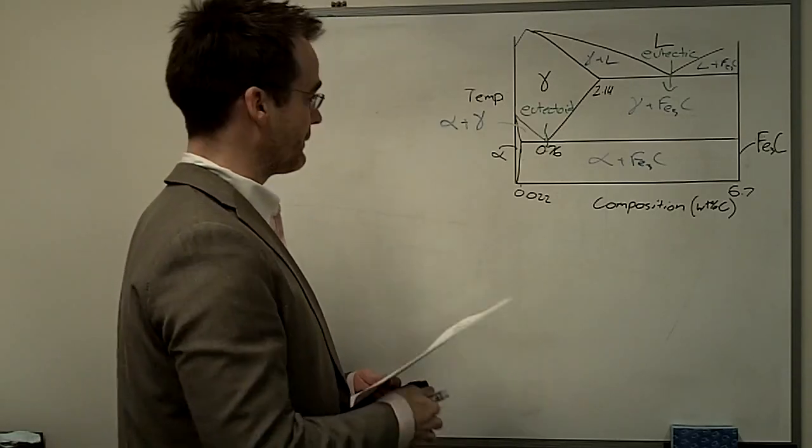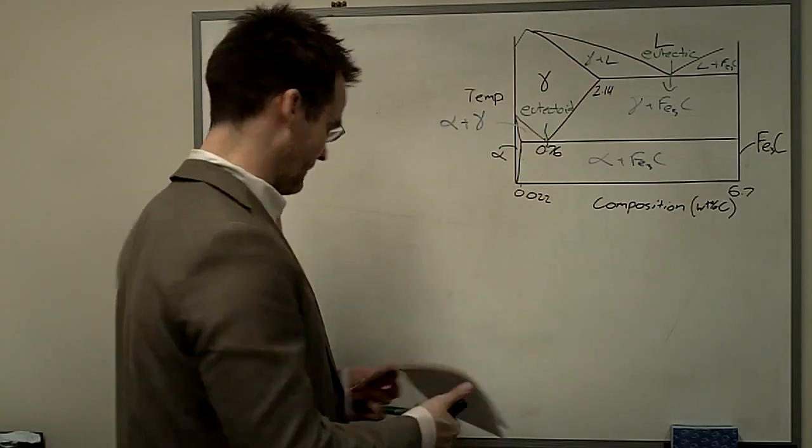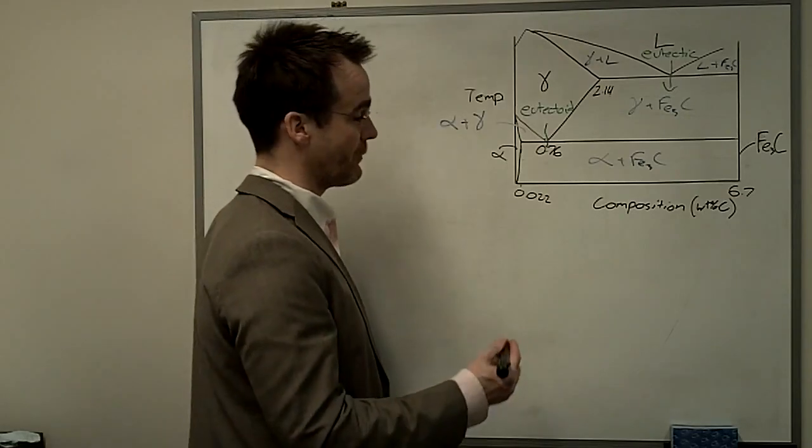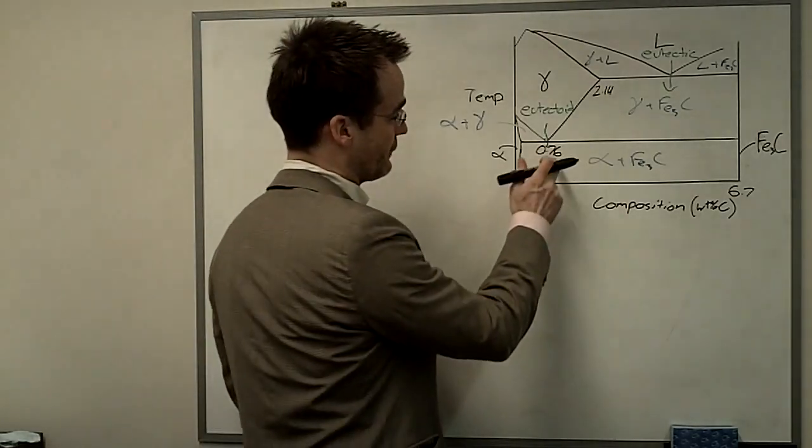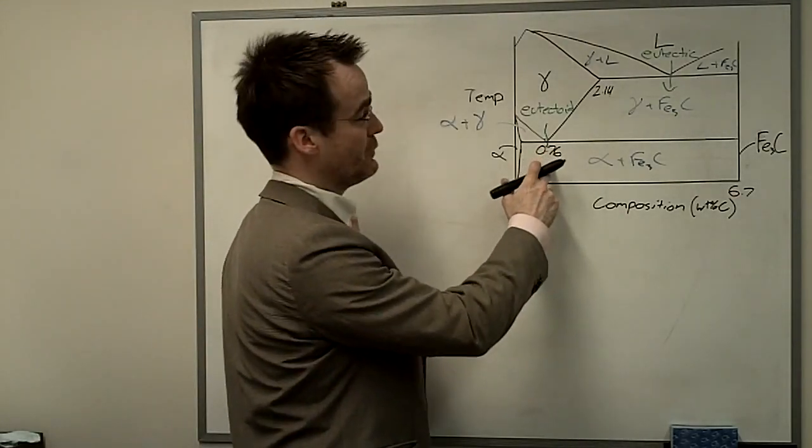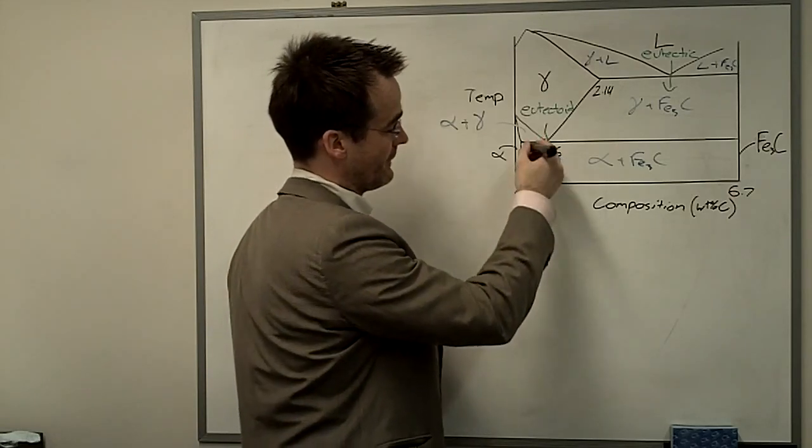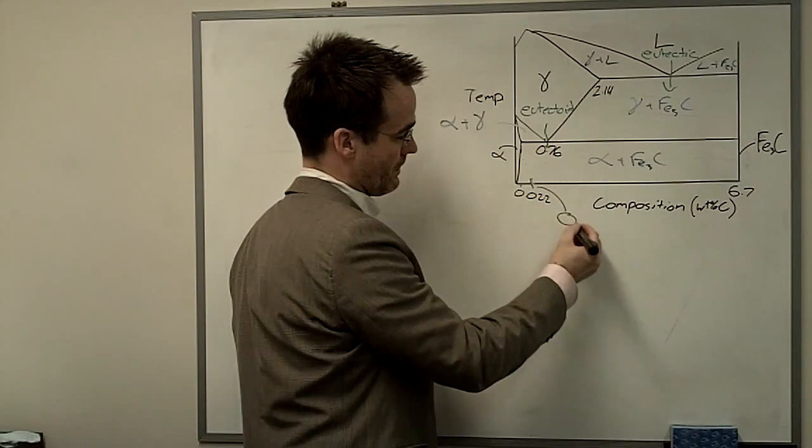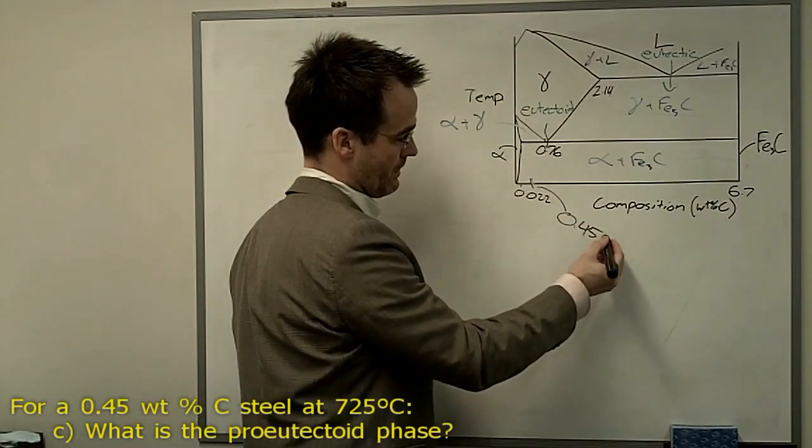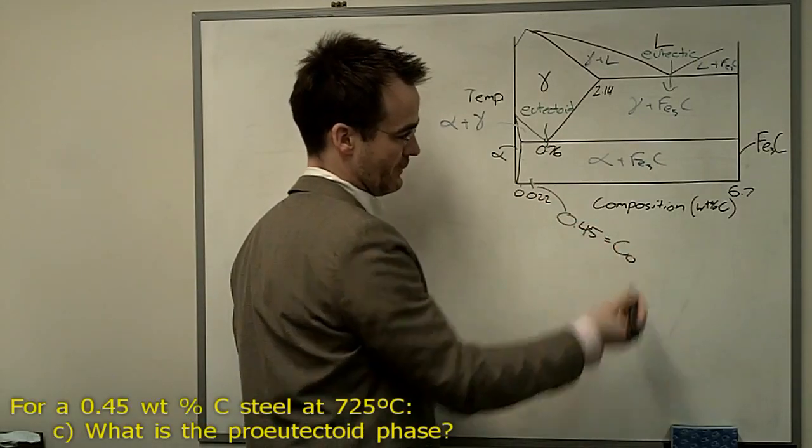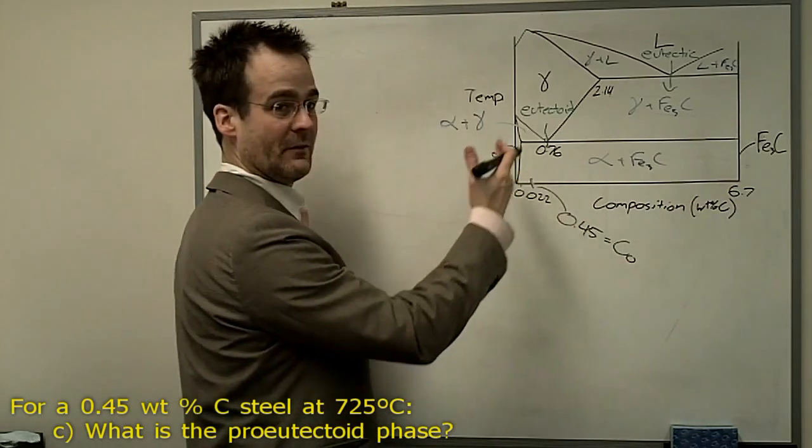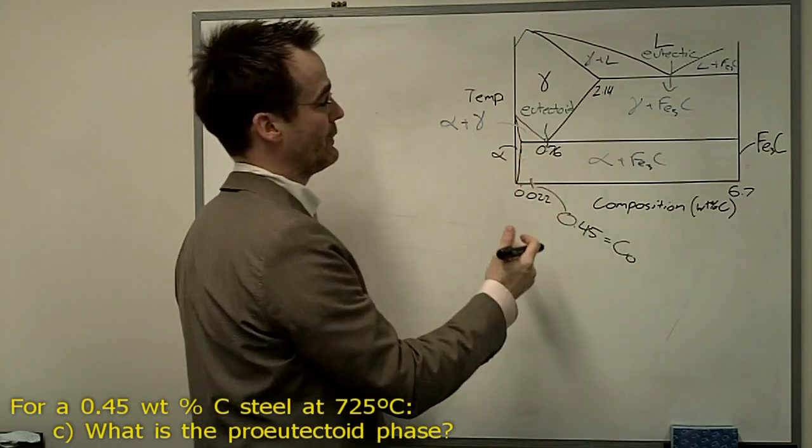All right, so then the question also tells us that the overall composition of the alloy we're looking at is 0.45 weight percent. So I've labeled the composition of the eutectoid at 0.76. So if our overall composition is 0.45, it's to the left of the eutectoid, it's a hypo-eutectoid composition.